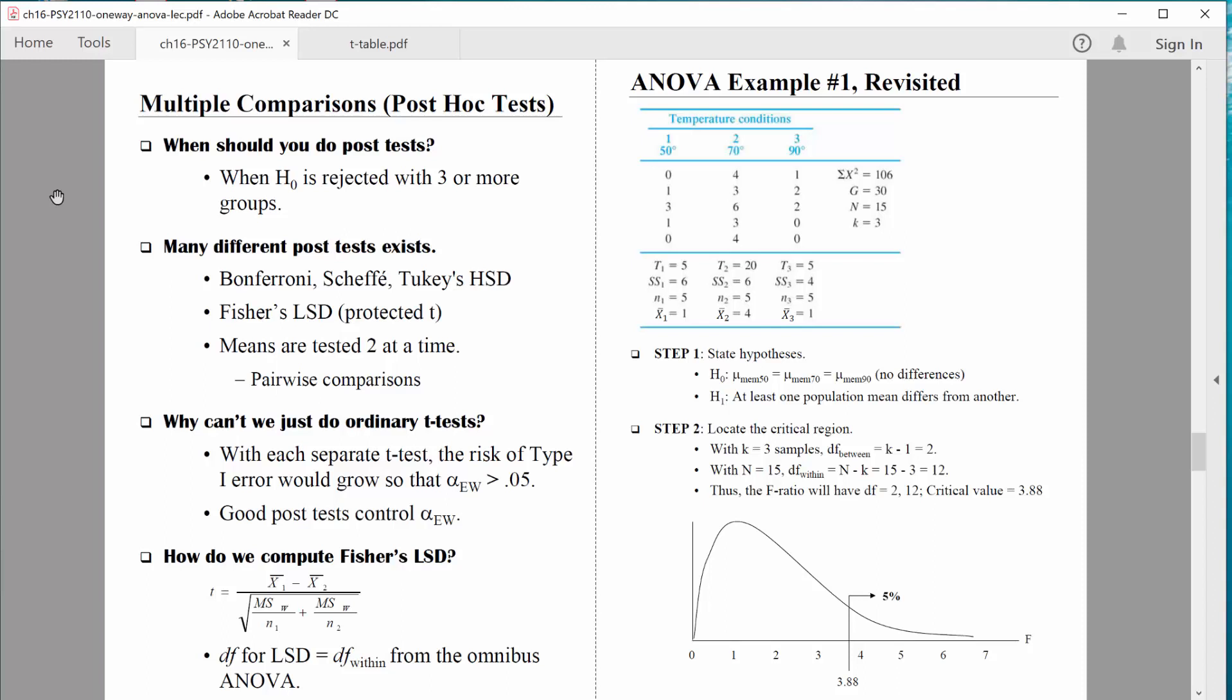Hi, everybody. Let's continue to talk about analysis of variance, but this time let's talk about what we do after we find a statistically significant omnibus ANOVA. Remember, the omnibus ANOVA is the overall analysis of variance that simply checks to see if at least some difference exists.